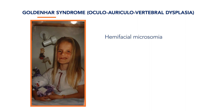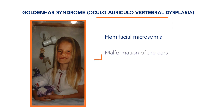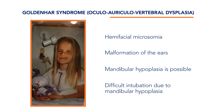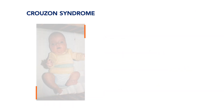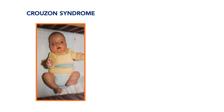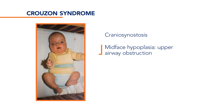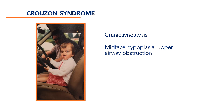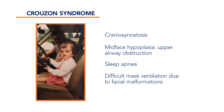Hemifacial macrosomia or Goldenhar syndrome is characterised by a marked asymmetry in craniofacial development with malformation of the ears and possibly mandibular hypoplasia. The latter can give rise to difficult visualisation of the larynx on direct laryngoscopy. Crouzon syndrome or craniofacial dysostosis is a rare syndrome causing craniosynostosis, early closure of one or more sutures of the skull, and hypoplasia of the mid-face causing shallow eye sockets and decreased growth of the maxilla. Children may have upper airway obstructions and sleep apnea. Due to the facial malformations, mask ventilation may be difficult and also direct laryngoscopy may be challenging.